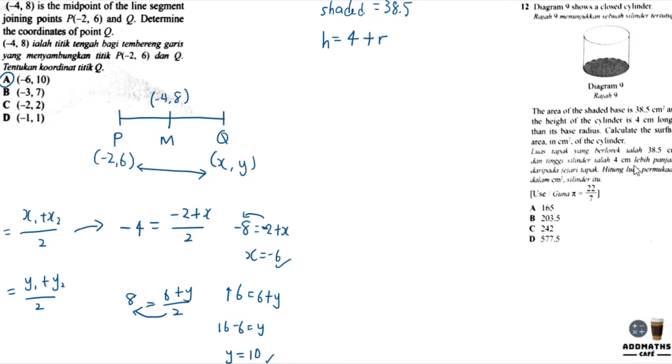So first to calculate the surface area of the cylinder you need to know the formula. The surface area of the cylinder is 2πr² plus 2πrh. So πr² is the area of the circle at the base. Since πr² equals 38.5, r² will be 38.5 divided by π. So r² will give you 12.25 if you use calculator, where π is 22 over 7.